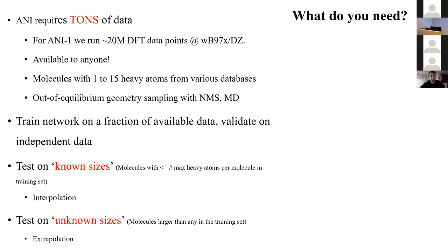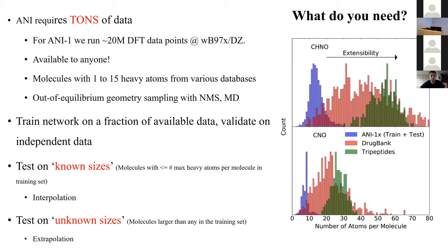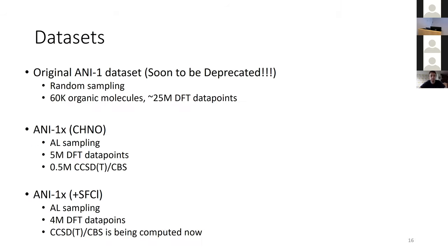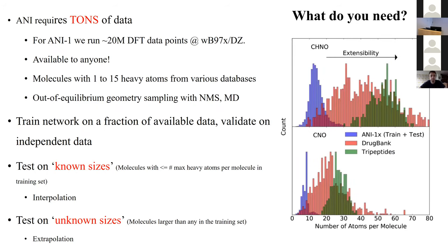You can test in two different regimes. You can draw test molecules from the same distribution — that's interpolation. But for chemists, that's not very interesting because we want to try something new. So all the tests I'll show you have been done in essentially an extrapolation regime. For example, this distribution shows the sizes of the molecules — blue corresponds to our training data, which is quite small — but we developed test datasets going up to 50–100 heavy atoms, including tripeptides, FDA-approved drugs, and larger organic systems, to see how it works in more realistic scenarios.